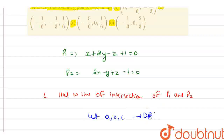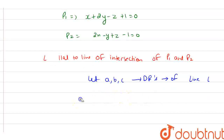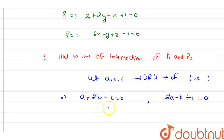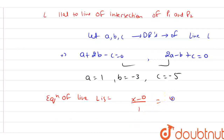Let a, b, c be the direction ratios of the line L. From the plane conditions we get: a + 2b - c = 0 and 2a - b + c = 0. After solving these two equations, we get a = 1, b = -3, and c = -5. Hence the equation of line L is x/1 = y/(-3) = z/(-5), as it passes through the origin.